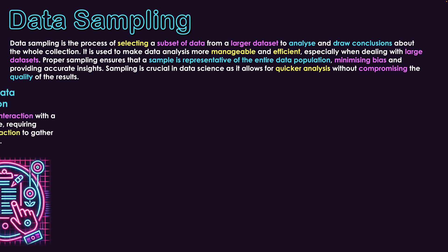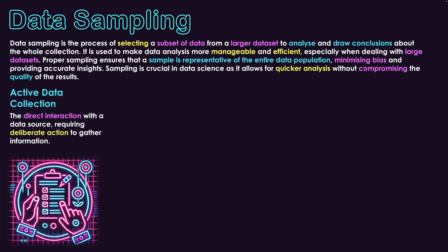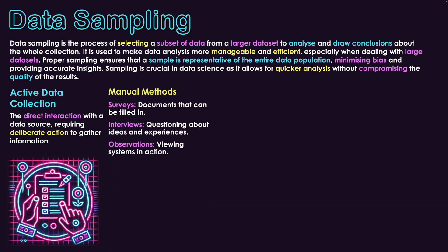Active data collection involves direct interaction with a data source, requiring deliberate action to gather data. I actually go to the data source and need it to be active. On the manual side, first I might do a survey — I go to a group of people, give them a piece of paper, and ask them to fill in feedback. They need to be active and fill in their answers so I can gather data; they are the data source. We also have interviews, where I sit down with people, talk to them, ask questions, and they need to be active by talking back and giving responses. That's another manual version of an active data collection method.